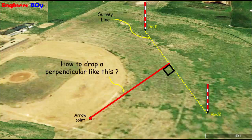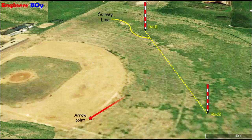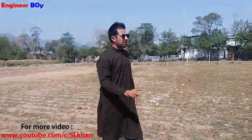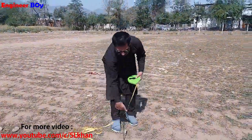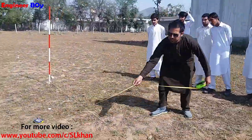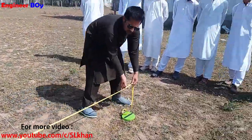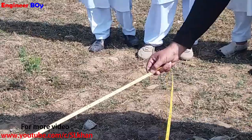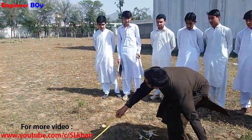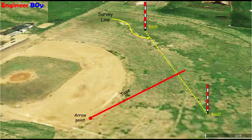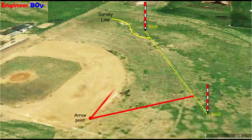Of course for this we have a simple method. Just open the tape a distance larger than the perpendicular distance from the point to the line, and scribe an arc intersecting the line at two points.